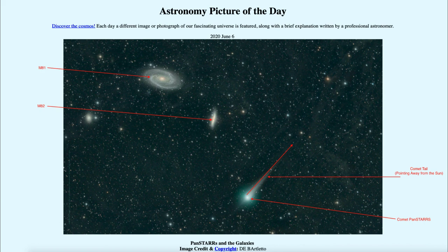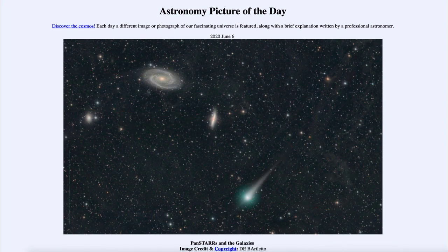While these objects look very close together on the sky—the comet and the two galaxies—they are actually very, very far apart in space. That was our picture of the day for June 6th, 2020. It was titled Pan-STARRS and the Galaxies. We'll be back again tomorrow for the next picture. Until then, have a great day everyone, and I will see you in class.